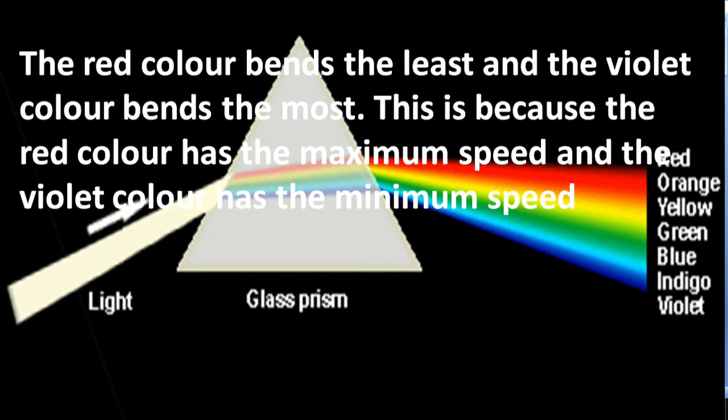As a result, violet takes the position at the bottom and red at the top. The colors of light obtained are violet, indigo, blue, green, yellow, orange, and red. Red is at the top, violet is at the bottom of the spectrum.